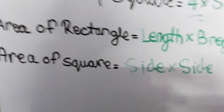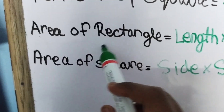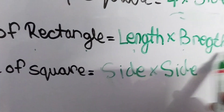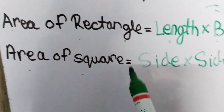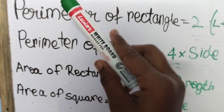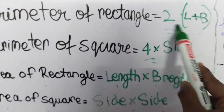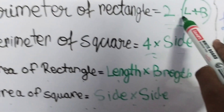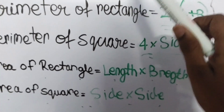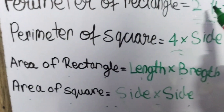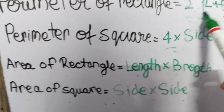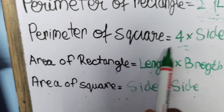The area of rectangle is called length into breadth. I am going to explain in the video about the perimeter of rectangle.